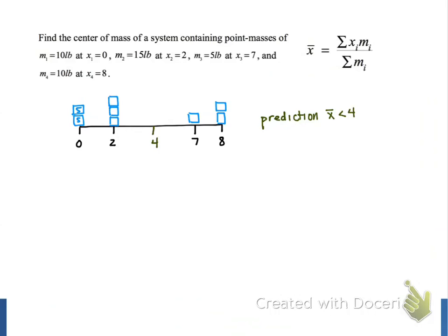On the top right of the screen, we see the formula for calculating the center of mass. This formula is essentially calculating the weighted average of the point masses, and that weighted average is the balancing point, the center of mass that we're looking for.